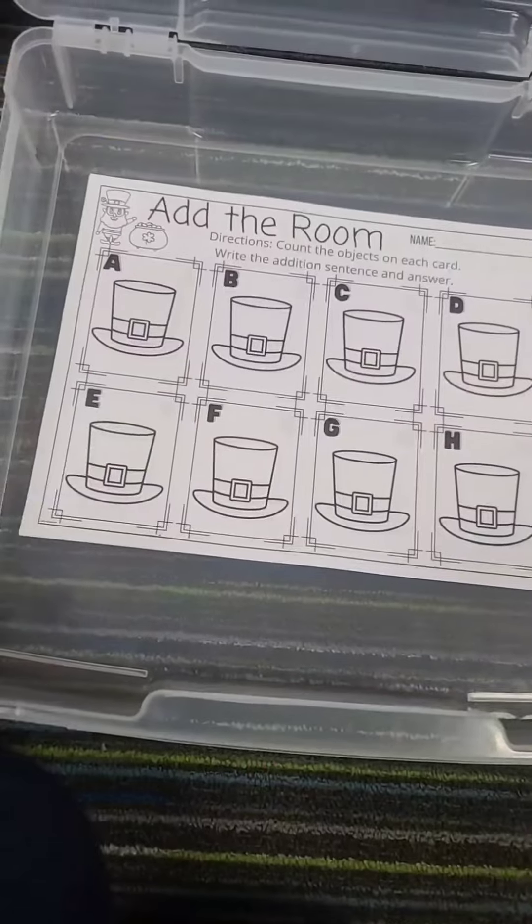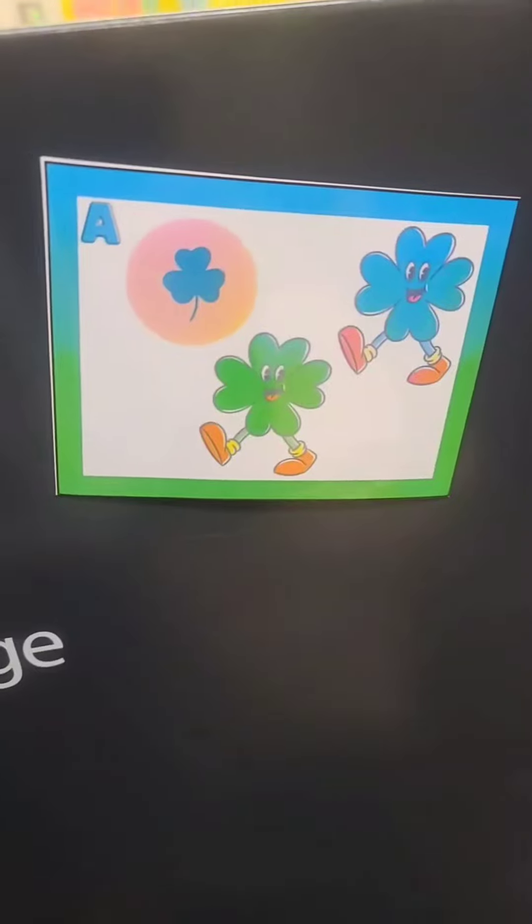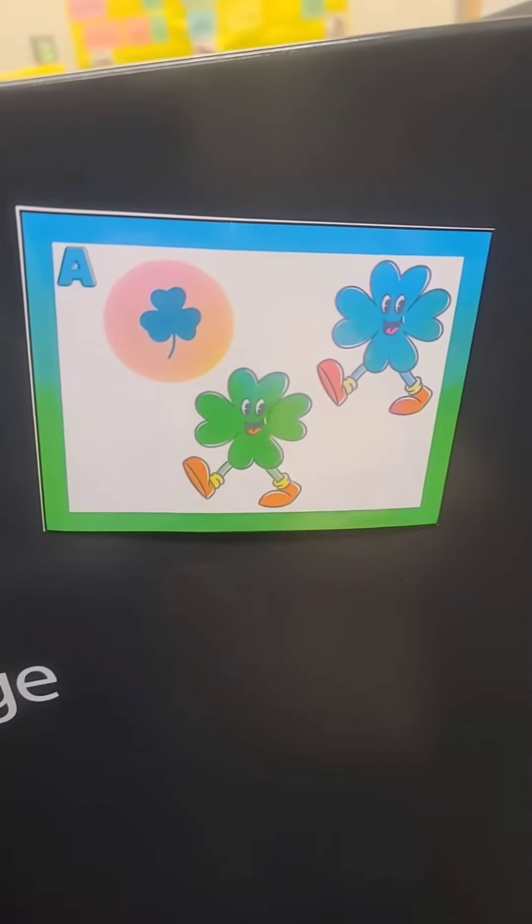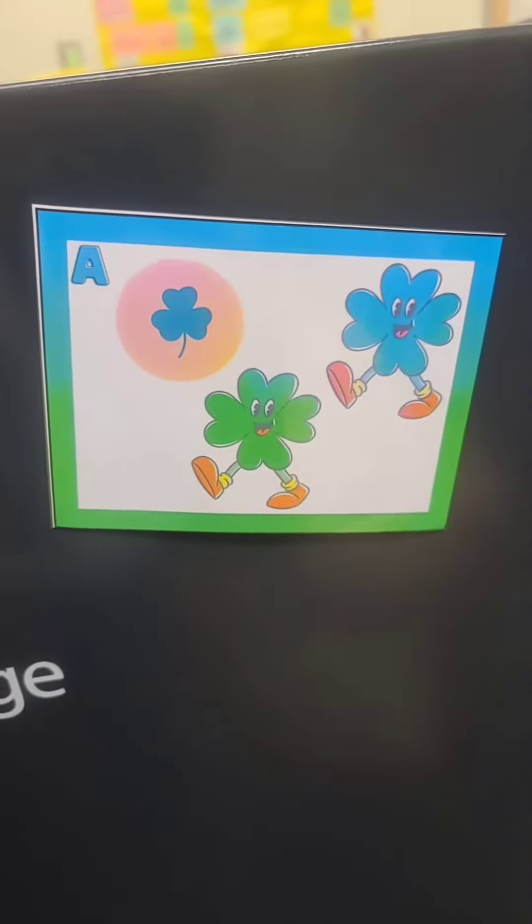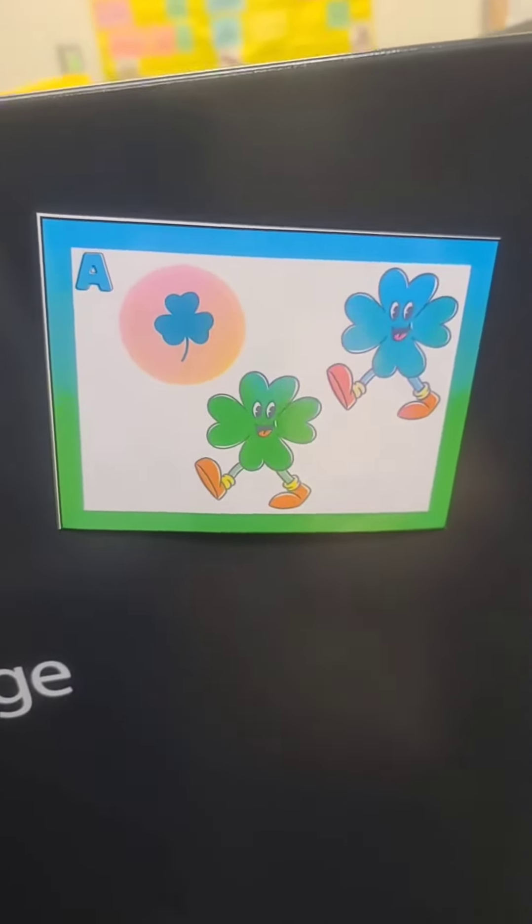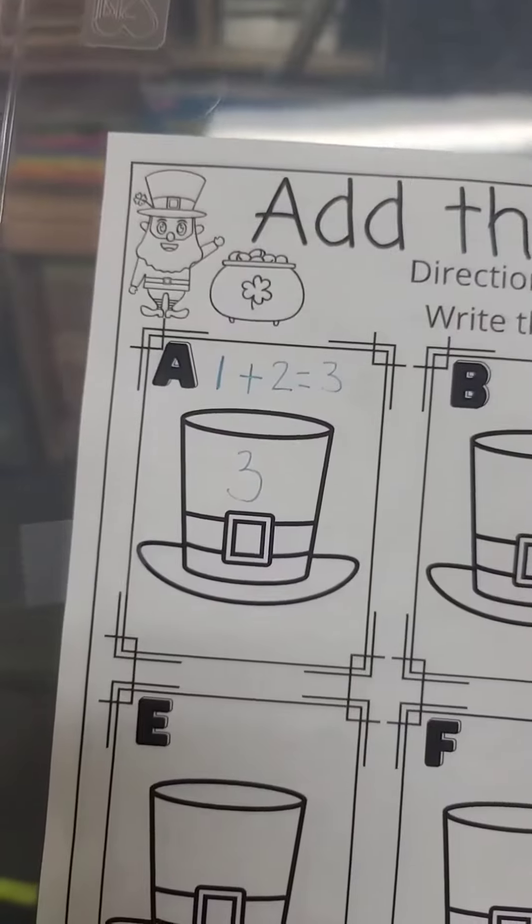Center number three: in this center, my kids are going to add the room. And they're going to do this by finding the cards that are around the room, like this one. In this case, we have one coin and these two images. So then they have to write the addition sentence, which it will be one plus two equals three, like this.